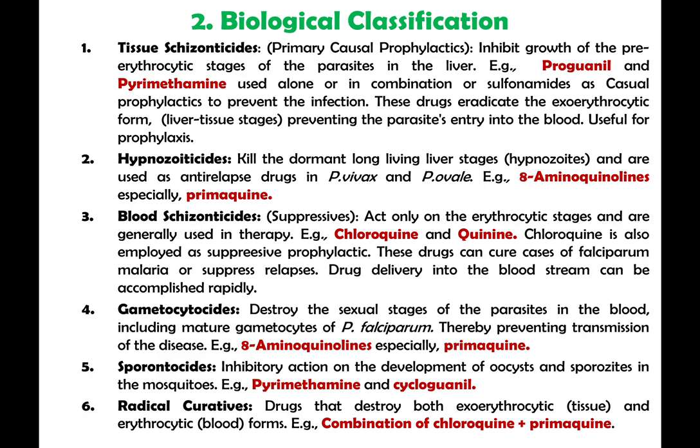Blood schizonticides or suppressives are the most widely used. They act on blood or RBC forms in the erythrocytic stage, generally for clinical cure. Chloroquine and quinine are most important and are used as suppressive prophylactics. Quinine due to toxicity is not much used, but chloroquine is very distinct. Gametocytocides destroy the sexual stages of parasites in the blood, particularly of falciparum — this is a strategy to prevent spreading of infection — and primaquine is used for this purpose. Sporontocides inhibit the development of oocysts and sporozoites in the mosquito — pyrimethamine and cycloguanil are examples. Radical curatives address both exoerythrocytic and erythrocytic forms: a combination of chloroquine and primaquine.